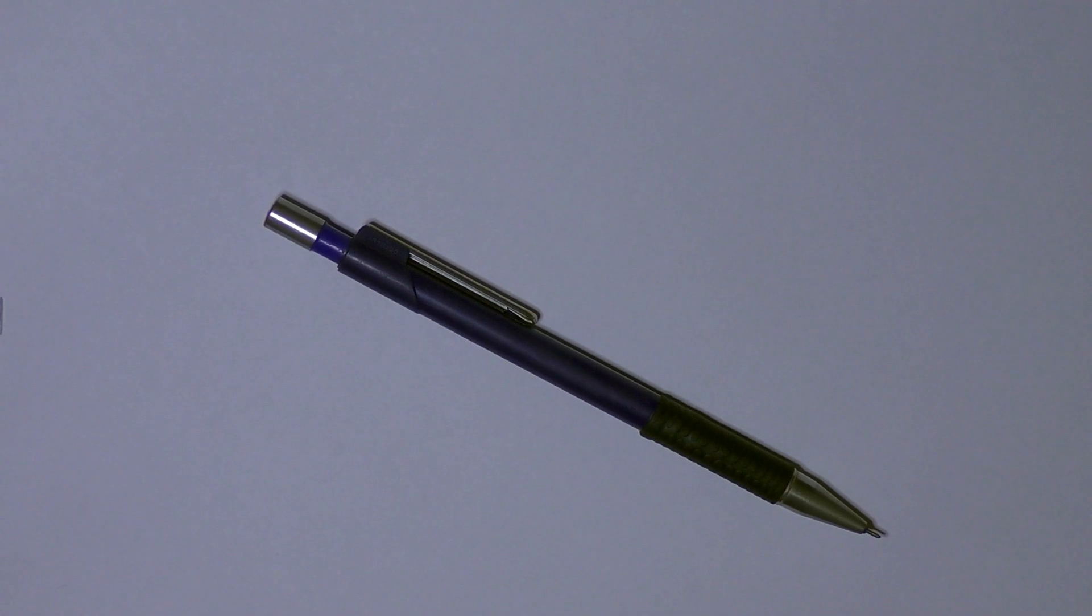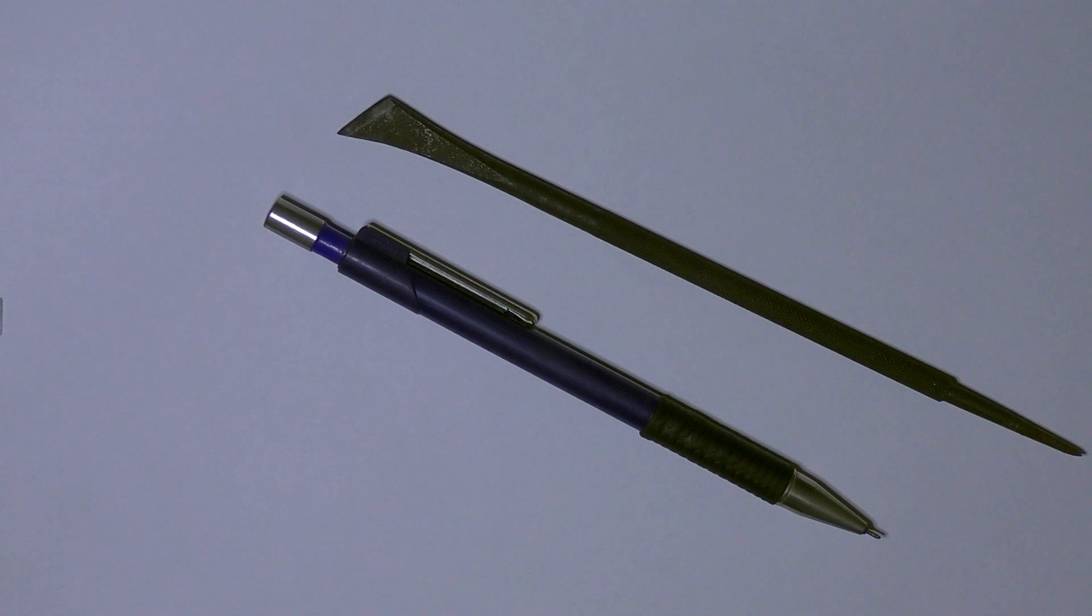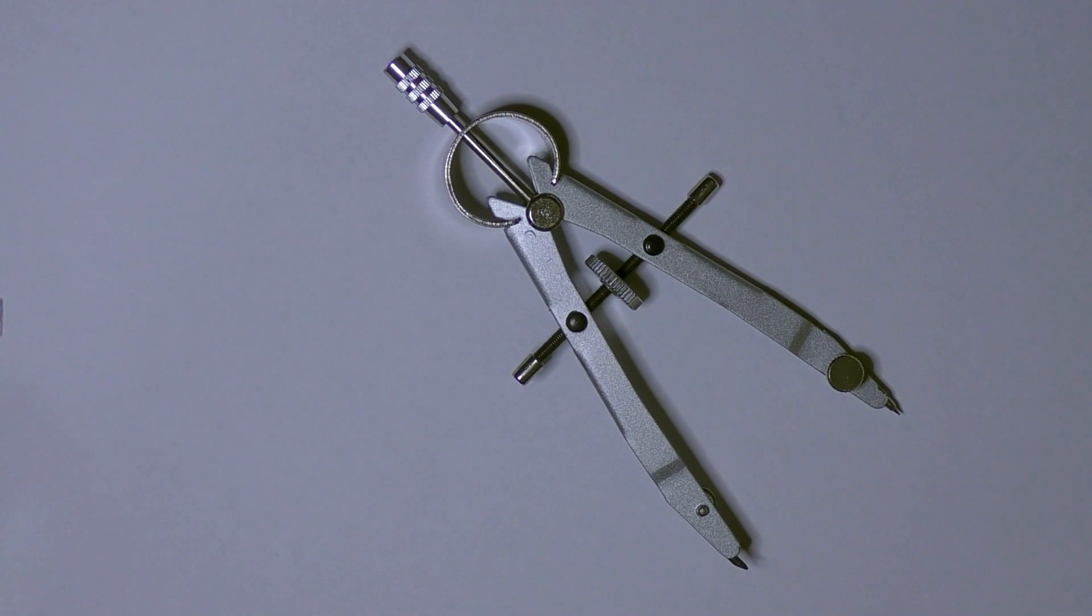For this you're going to need a few different things depending on whether you're doing this on steel or paper. You're going to need a scriber or a pencil, a set of dividers or a compass, and of course a straight edge or a ruler.